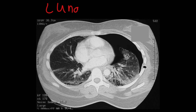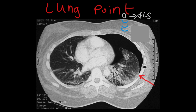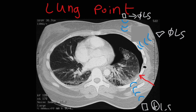So what is the lung point? The lung point is simply the transition between normal lung sliding and air in the pleural cavity — aka pneumothorax. In this patient, if we place our ultrasound transducer anteriorly and interrogate, we see no lung sliding. Similarly further anteriorly, no lung sliding. But if we place our transducer posteriorly, we see lung sliding present. And if we slide up and place our transducer right at the transition point, we see the lung point — lung sliding present and lung sliding absent in the same intercostal space.